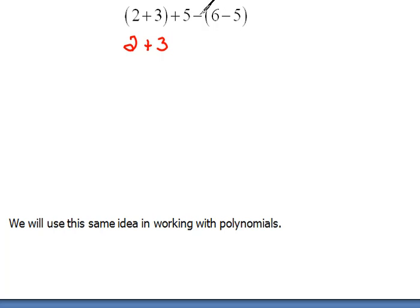And then, over here, I would technically have to distribute out that negative. Remember that distribution property? So I could rewrite this as plus 5 and then minus 6, and negative times negative would be a positive 5. I could rewrite my problem just like this,